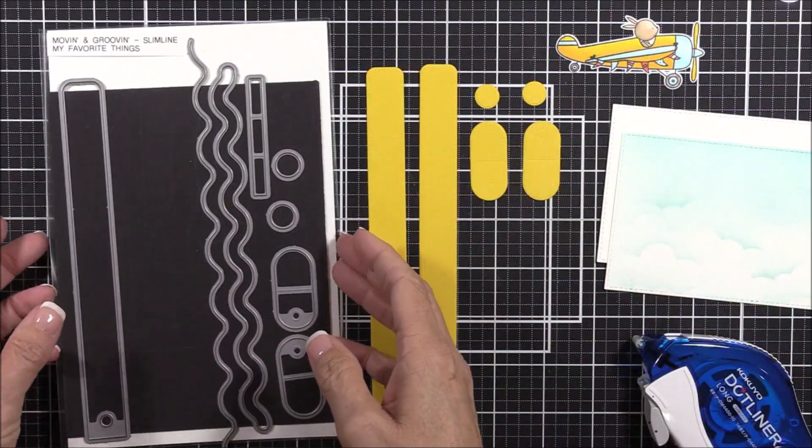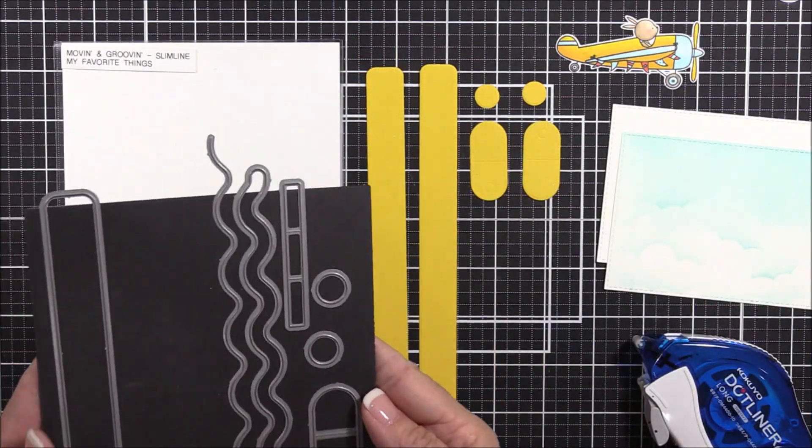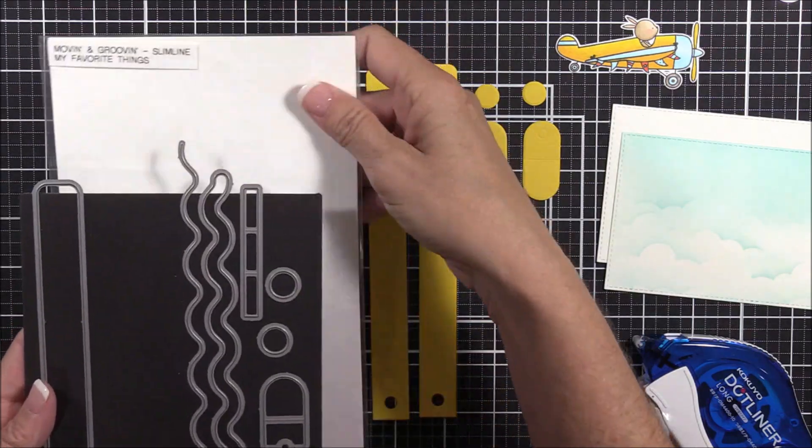Then I die cut that panel and another smooth white panel using the stitched rectangle die from the Slimline Starter Set Dynamics.